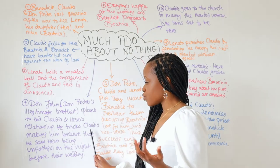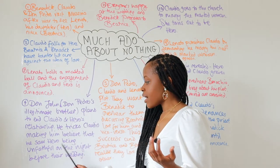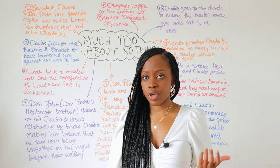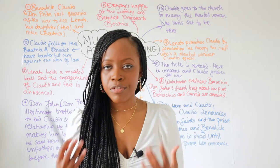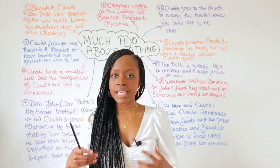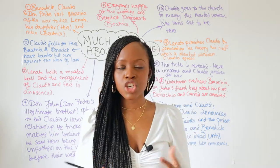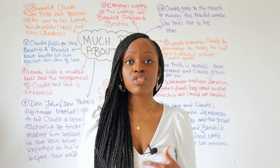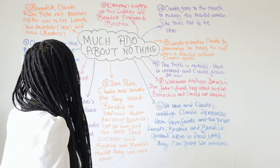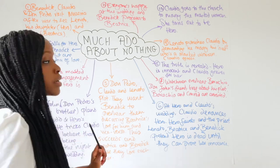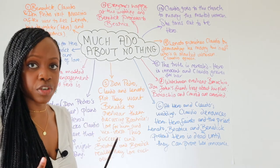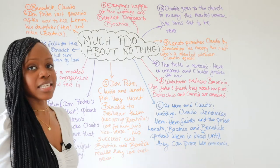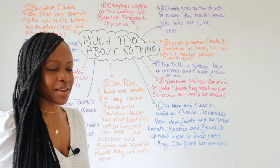Don John tricks Claudio by making him believe that he saw Hero being unfaithful on the night before their wedding. Don John takes happiness in causing mischief and misery to others, perhaps to make them feel the same level of misery that he feels. Claudio does believe his trickery and his plot.